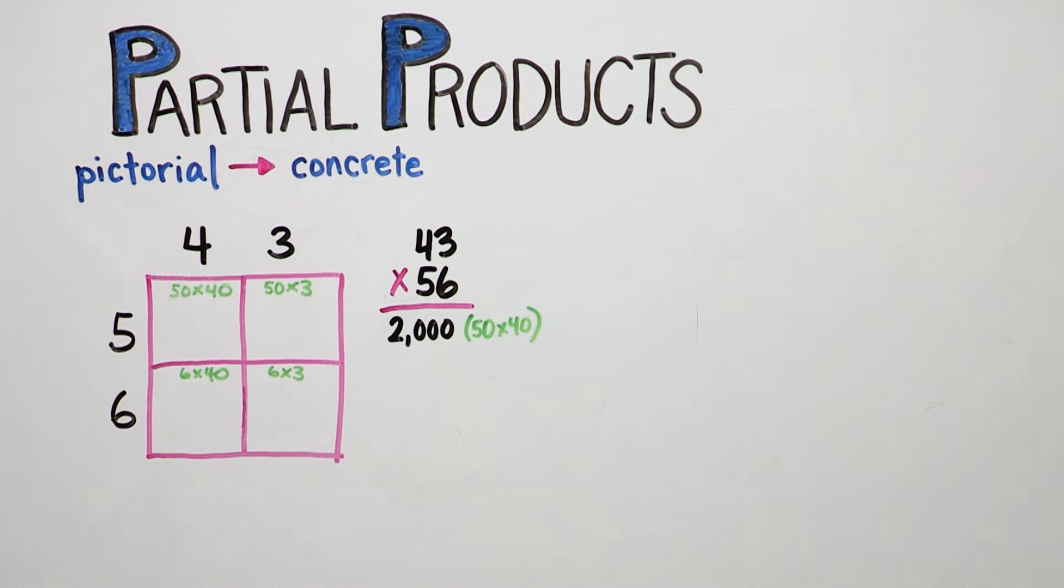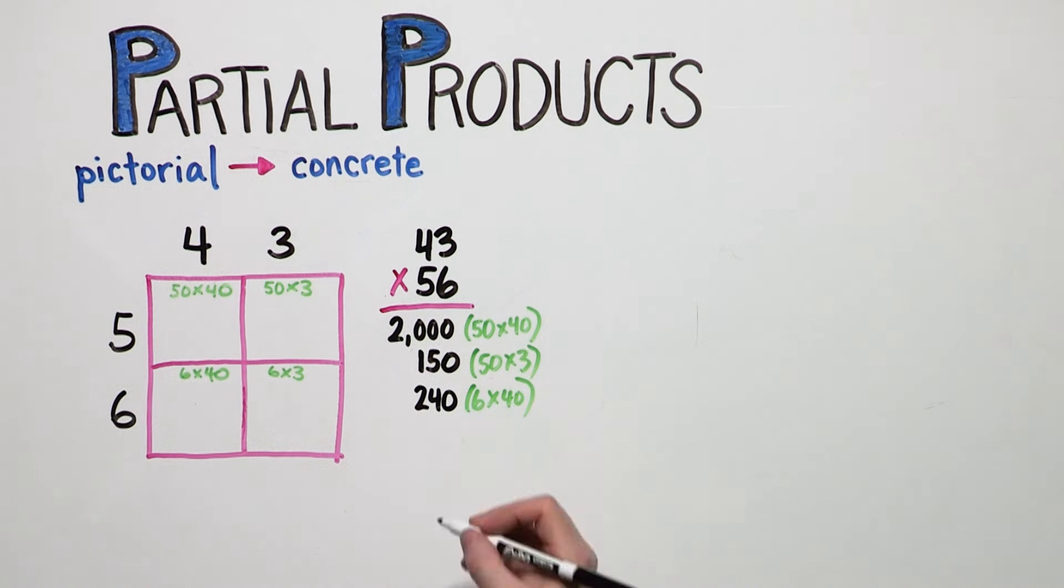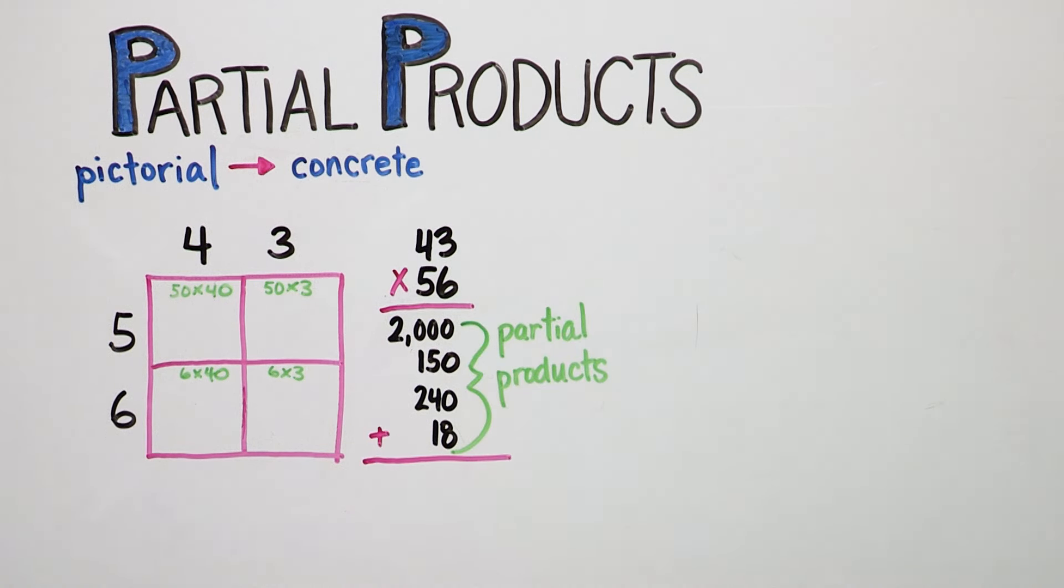Next, she will multiply tens times ones. Then, ones times tens. And last, ones times ones. These are called partial products. This is the product or answer.